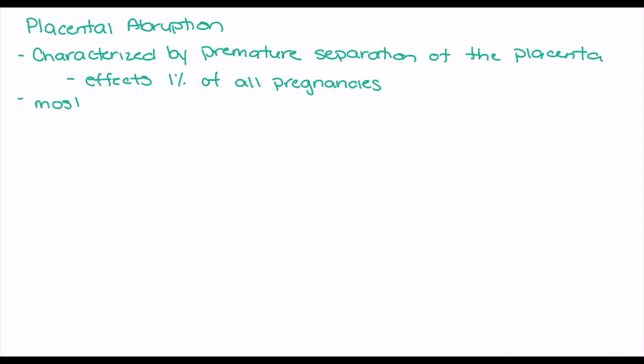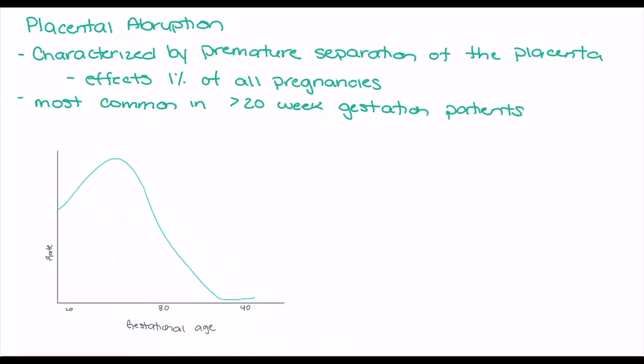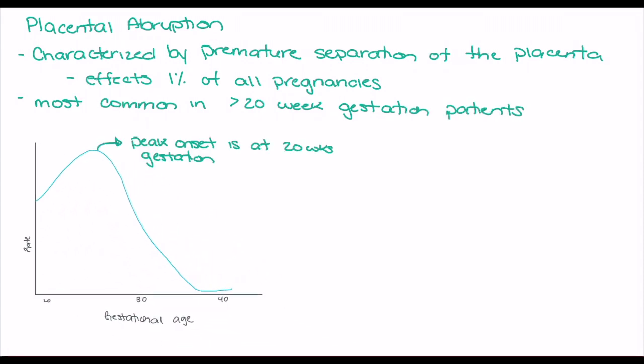In terms of specific onset, placental abruption most commonly occurs in patients who are 20 weeks or greater gestation, with peak onset occurring at 20 weeks and falling rapidly as we enter the third trimester of pregnancy.